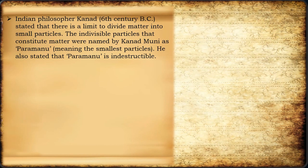Let's look at the tree of matter. Indian philosopher Kanad, during the sixth century, stated that there is a limit to dividing matter into small particles. The indivisible particles that constitute matter were named by Kanad Muni as 'pramanu,' meaning the smallest particles. He also stated that pramanu is indestructible.